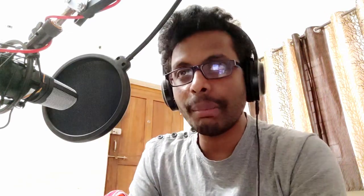Among the corrosion control methods in our syllabus, we have sacrificial anodic protection and impressed current cathodic protection. Most corrosion control methods depend on the nature of the metal and the factors that influence corrosion. By modifying these factors, we can control corrosion. There are four important corrosion control methods in our syllabus.